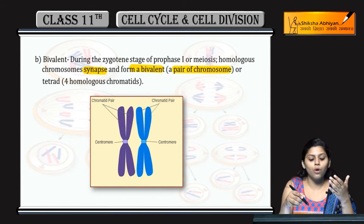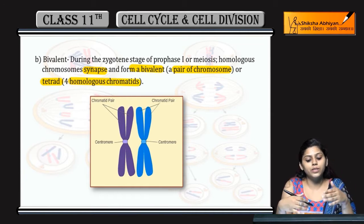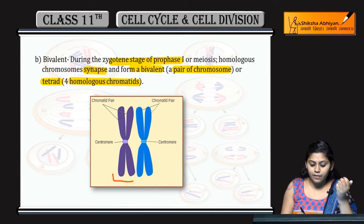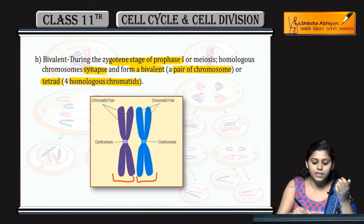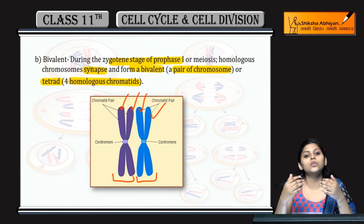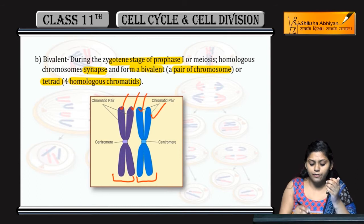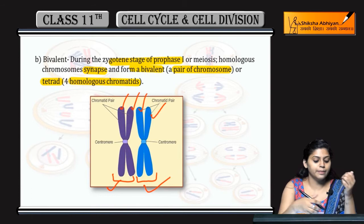A Bivalent is a pair of chromosomes in the Tetrad stage, which contains four homologous chromatids. This occurs during the Zygotene stage of Prophase I of Meiosis I. There is a close association, and a Tetrad is formed — four chromatids come together in close association. Since there are 2 homologous chromosomes, this is called the Bivalent stage.